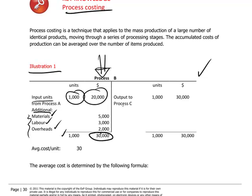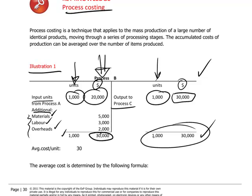As a result, the 1,000 units remain the same number, but now they have an accumulation of $30,000 worth of costs. At the end of Process B, these 1,000 units are ready to go out to Process C, carrying an accumulation of $30,000 worth of production costs. The average cost per unit is clearly $30,000 divided by 1,000 units, which is $30.